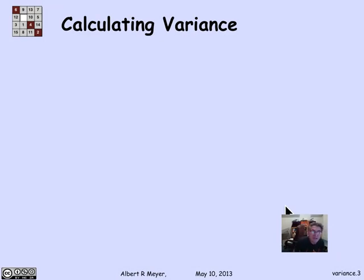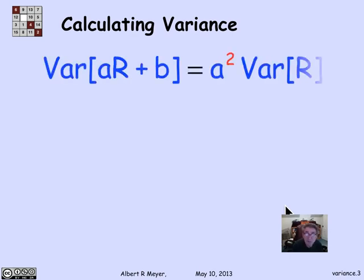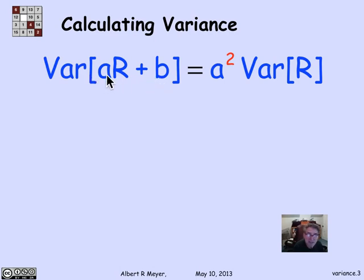There are a couple of other rules for calculating variance of new variables from old ones that are basic, like additivity of expectation — but it doesn't quite work so simply for variance. The first rule is that if you ask about the variance of aR plus b, that turns out to be a² times the variance of R. The additive b doesn't matter, and because variance involves squaring, the constant a factors out as a².